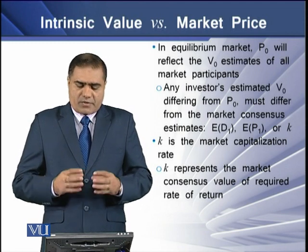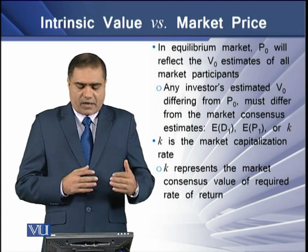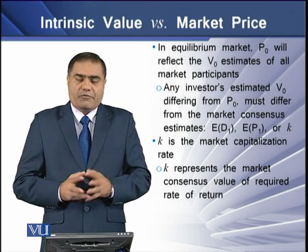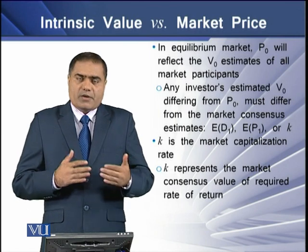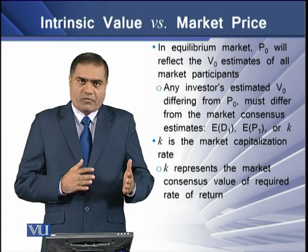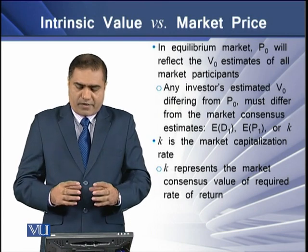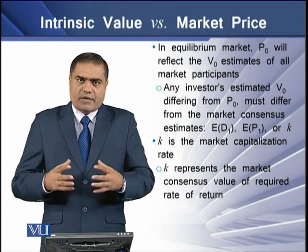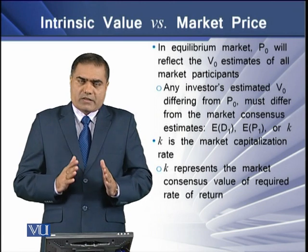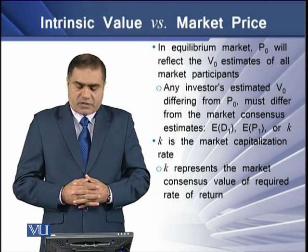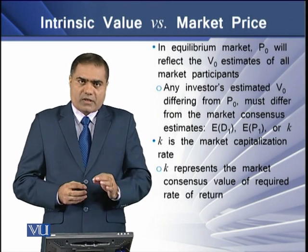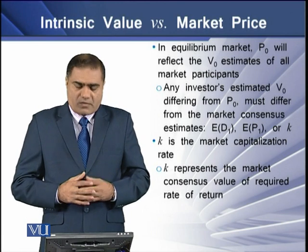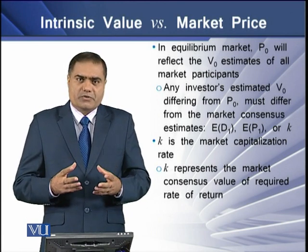In an equilibrium market, P0 will reflect the V0 estimates of all market participants. Any investor's estimated intrinsic value differing from the current stock price must differ from the market consensus estimates — whether in expected dividend, expected price, or the capitalization rate, which is the required rate of return K. This K is also termed the market capitalization rate, representing the market consensus value of the required rate of return.